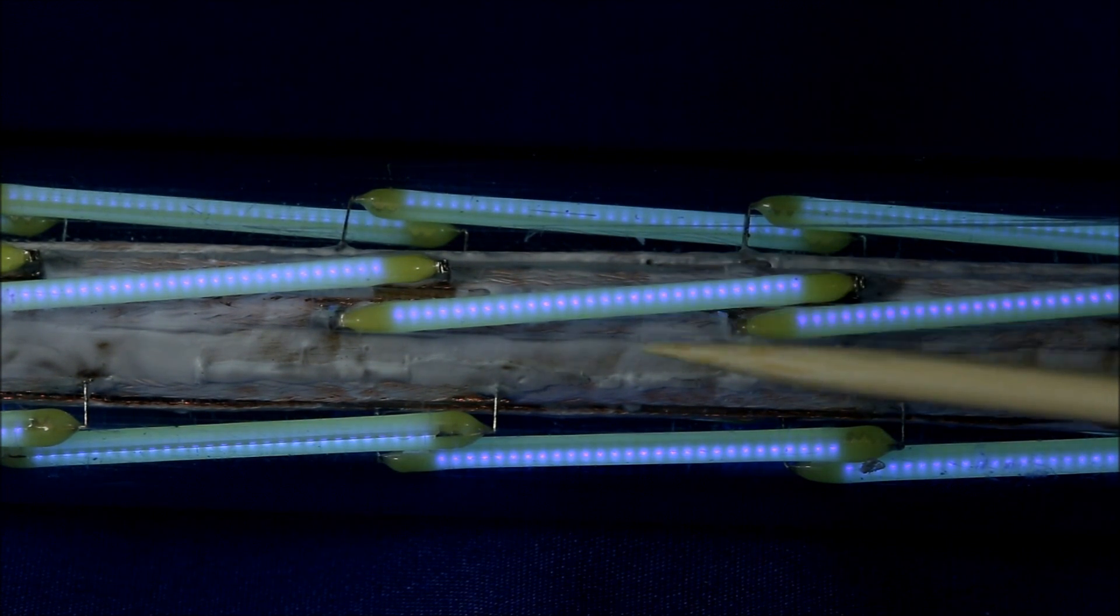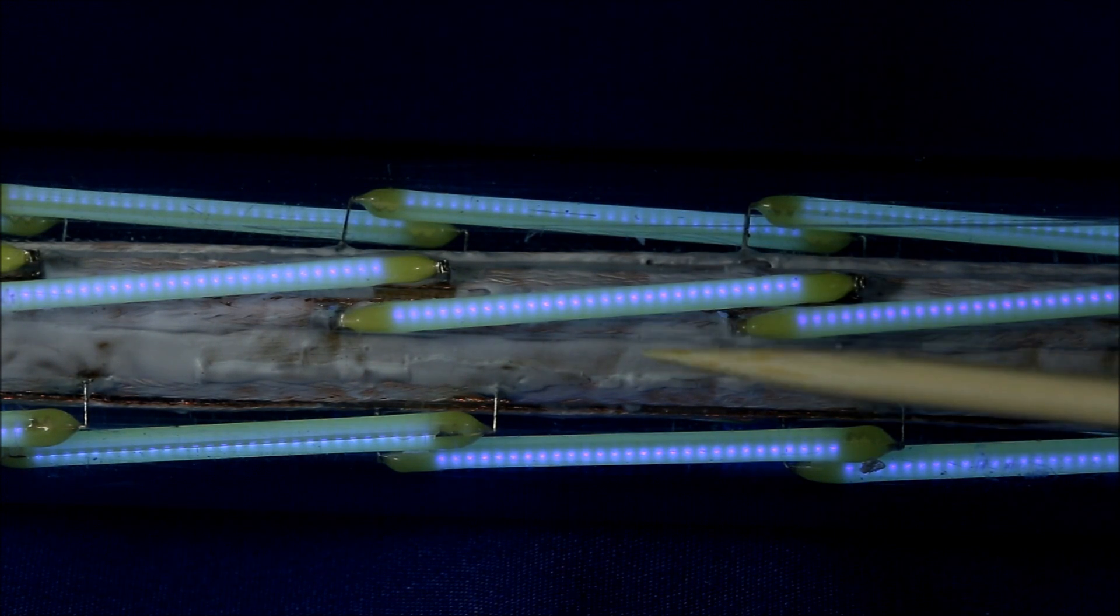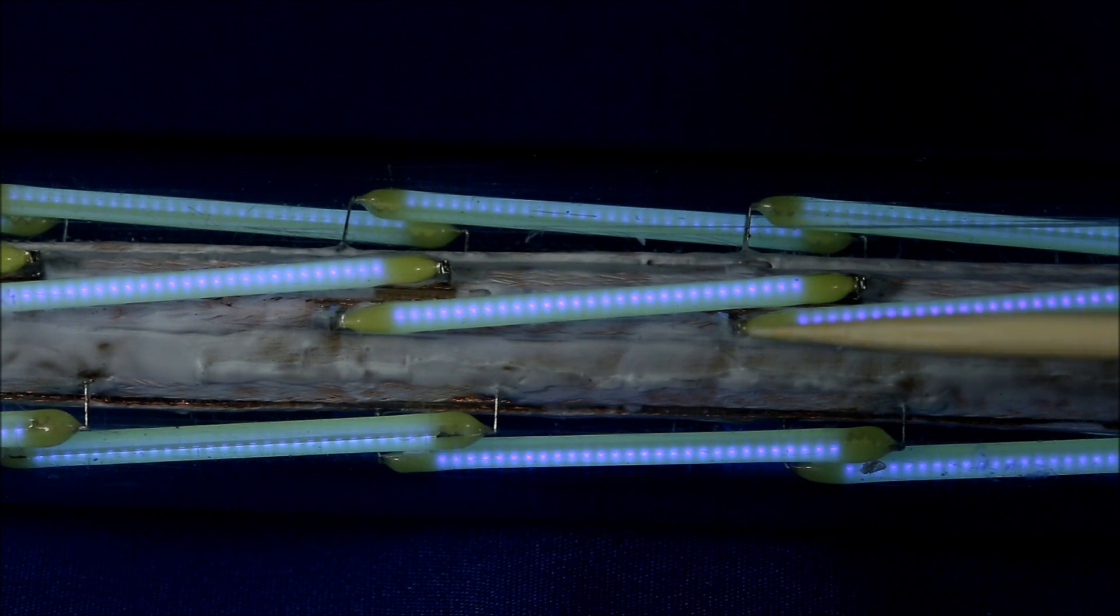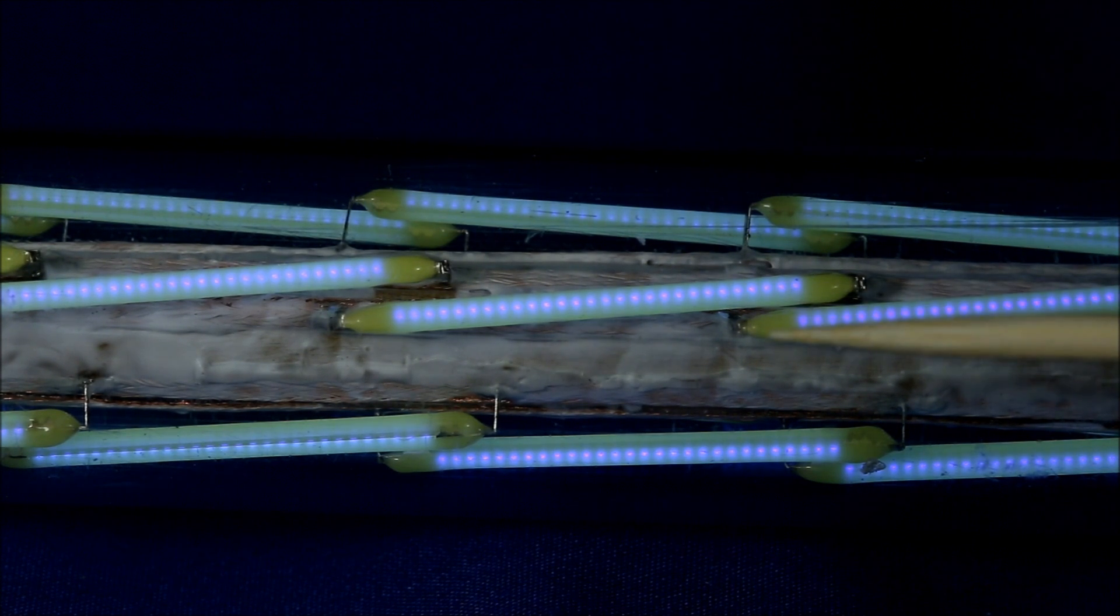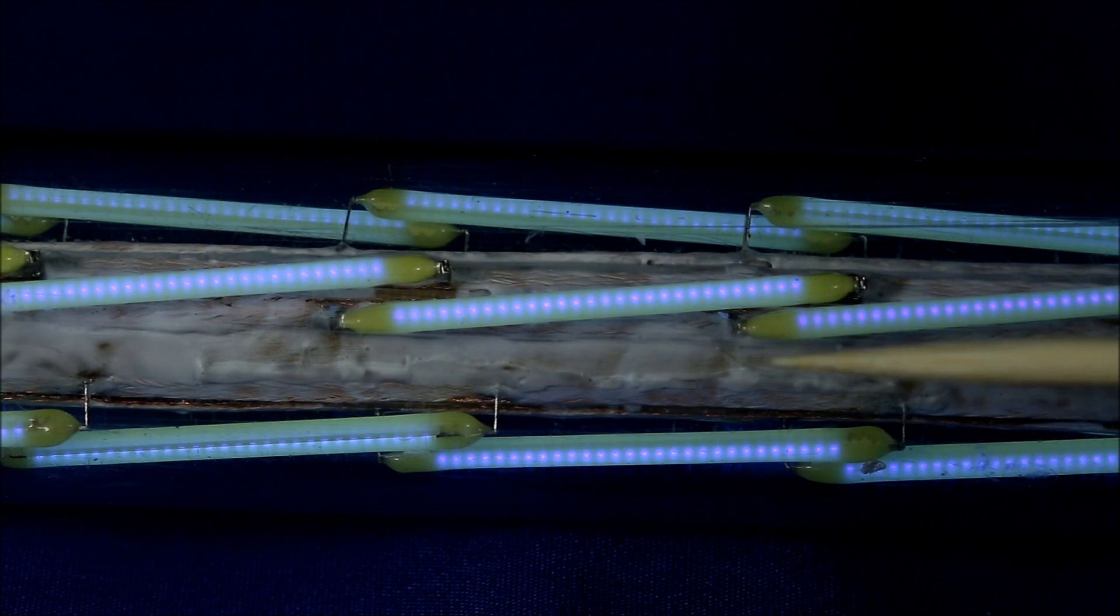This gives filament LEDs a much more uniform illumination. The last eighth inch of each filament LED does not generate any light, so by angling them and overlapping them, we avoid any dark spots in each string.